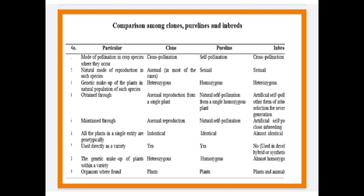All plants in a single entity are genotypically — in clones, identical; in pure lines, also identical; in inbred lines, almost identical. Used directly as a variety — in clones, yes; pure lines, yes; inbreds, cannot be used directly as a variety but used in developing hybrids or synthetics. Organisms found — clones are found in plants; pure lines in plants; inbreds in both plants and animals.